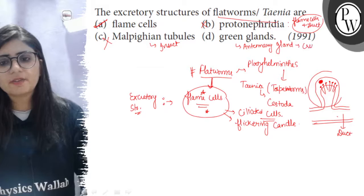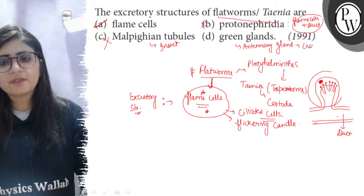And green glands or antennary glands, these are the excretory structures which are present on the antennae and these are found in crustaceans. Crustacea is a class of arthropods which include all prawns and crabs. So this is also incorrect with respect to flatworms. So in case of flatworms excretion occurs by flame cells. Option A is the right answer. All the best!